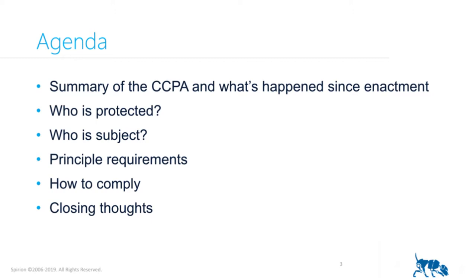So what are we going to do this hour? We're going to talk about the California Consumer Privacy Act, what's happened since its enactment — which has a story in and of itself. We'll talk about who's protected, who's subject, because it is indeed applicable outside of the U.S. We'll talk about some of the principal requirements and compare and contrast them to GDPR. We'll talk about some ideas on how to comply, and I'll offer some closing thoughts. So without further ado, let's talk about CCPA and what's happened since it was enacted this year.